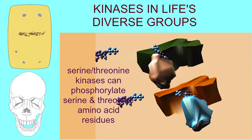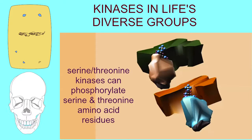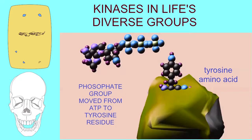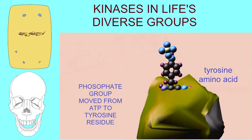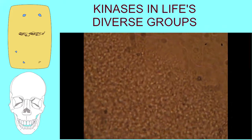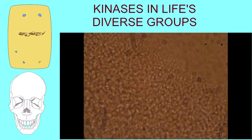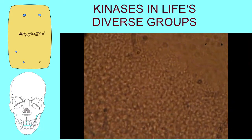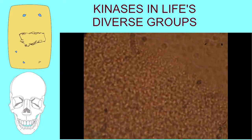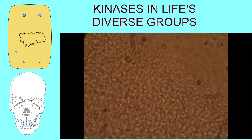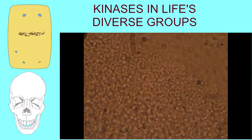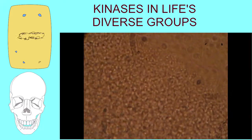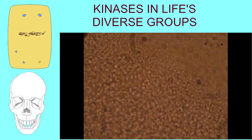In human cells, the main amino acids to which phosphates can be added are serine, threonine, and tyrosine. In that, I am a little different from you. In bacteria, the main amino acids to which phosphate groups are added are histidine and aspartic acid.